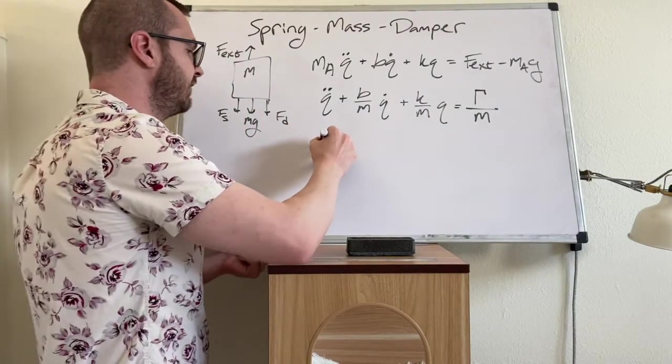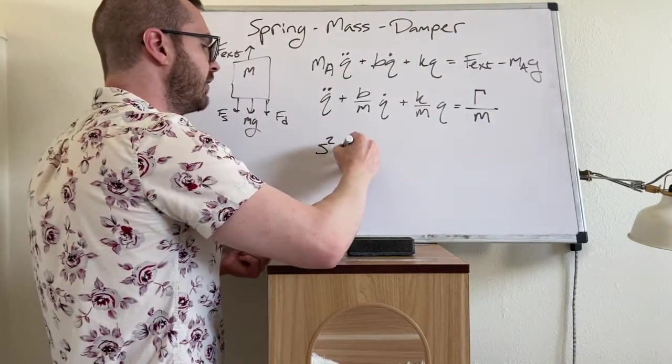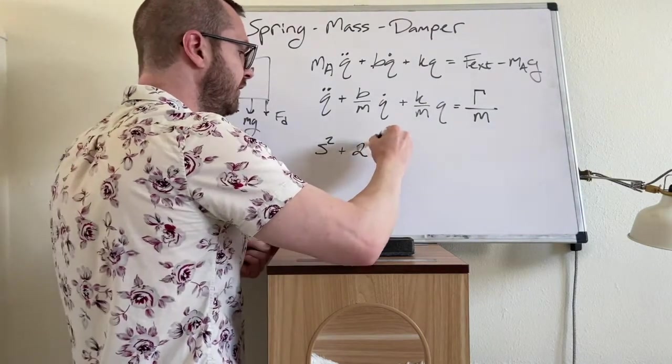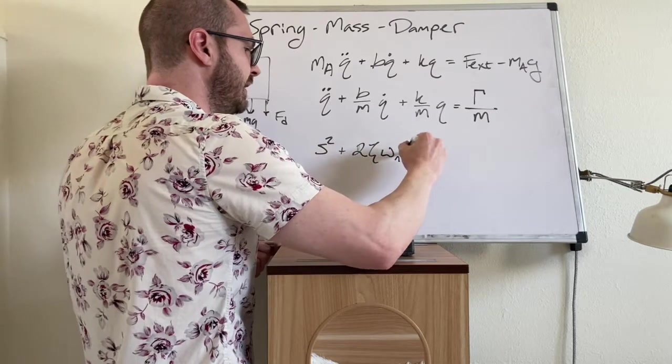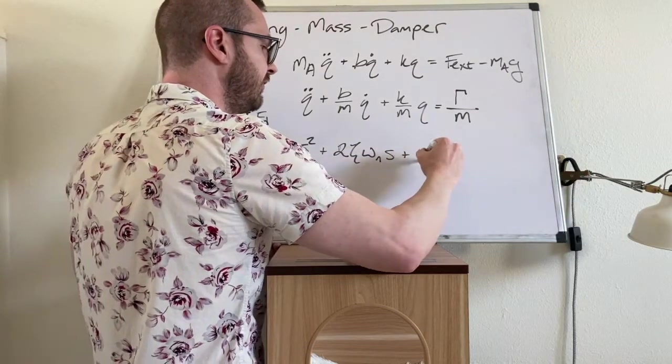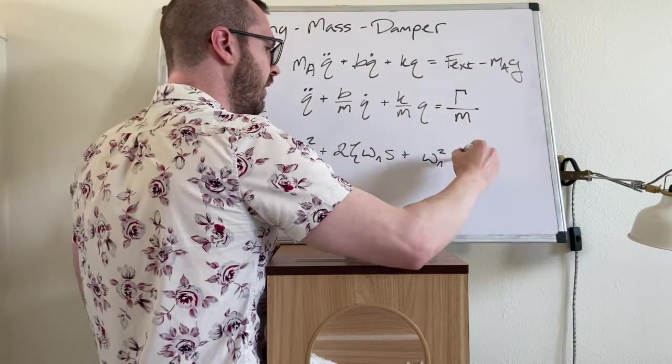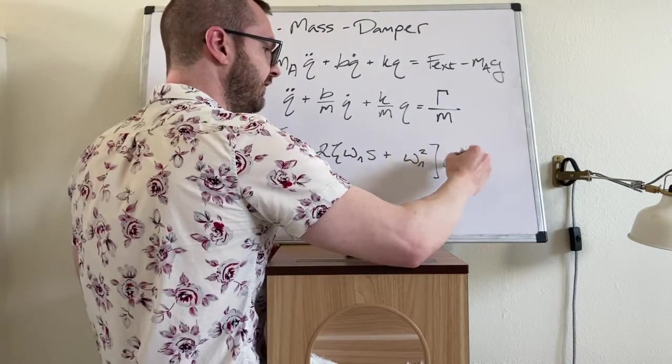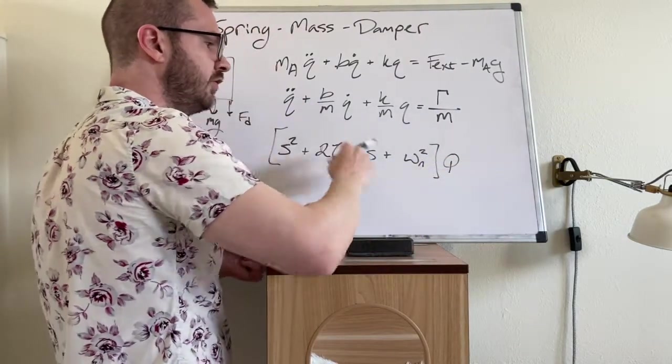As S squared plus two zeta omega N times S plus omega N squared. And then now we're looking at, we're in Laplace domain. So I'll write Q as a capital Q. This is Q of S.